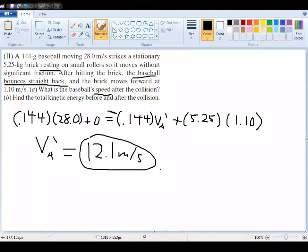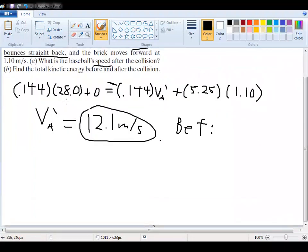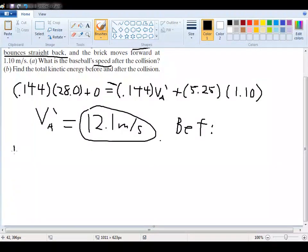But then for part B, you want the total kinetic energy before and after the collision. So let's look for the kinetic energy before. Kinetic energy is pretty simple to find. We've done it a hundred times by now. We know that KE is equal to one-half mv squared.